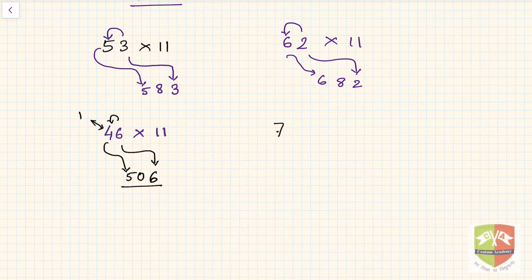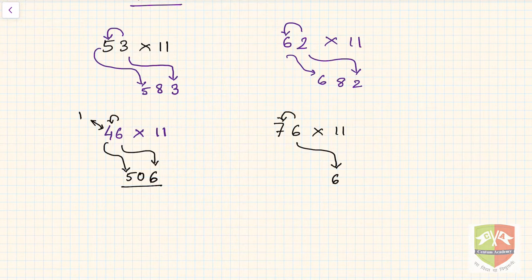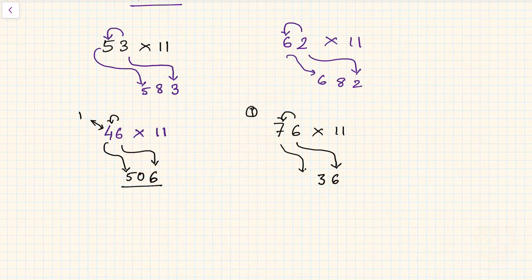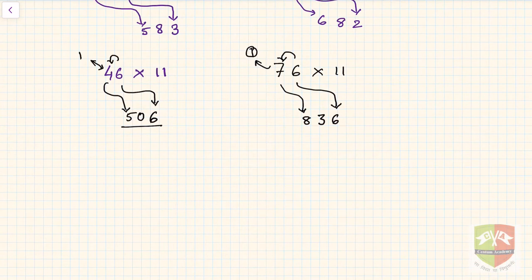Another example: 76 into 11. The 6 goes on the right. Now 6 plus 7 is 13, so write the units digit 3 and carry 1. Then instead of writing 7, add 7 plus 1 to get 8. So the answer is 836.